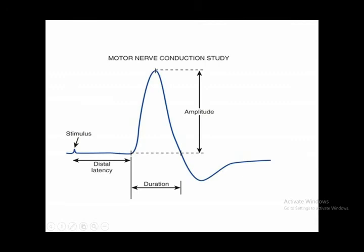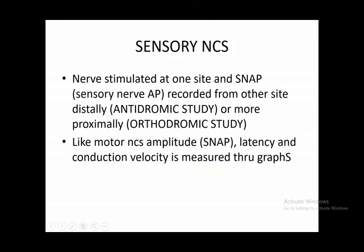You apply a stimulus and measure how quickly it produces the compound muscle action potential amplitude, then compare with normal results to determine if the study is abnormal. In sensory NCS, the nerve is stimulated at one site and the sensory nerve action potential (SNAP) is recorded from the other — either distally (antidromic study) or proximally (orthodromic study). Amplitude, latency, and conduction velocity of sensory nerve action potentials are measured.